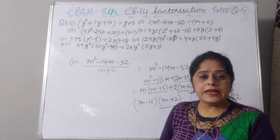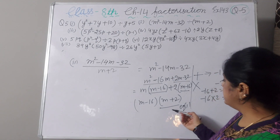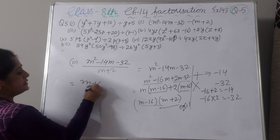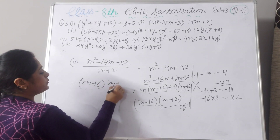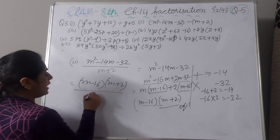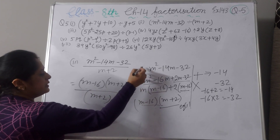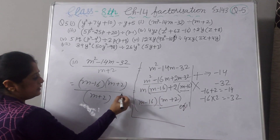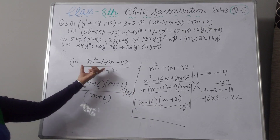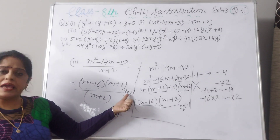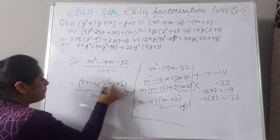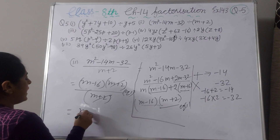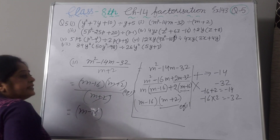So m squared minus 14m minus 32 is converted into the two factors: (m minus 16)(m plus 2). I will call this equation 1. Writing the full expression: (m minus 16)(m plus 2) divided by (m plus 2). Cancel m plus 2 with m plus 2, and your answer will be m minus 16.